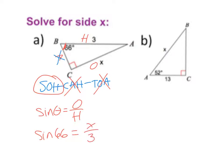To solve for X, multiply both sides by 3 to get rid of the denominator. The answer is 3 × sin(66°), which on my calculator is 2.74. That's the side X for problem a.